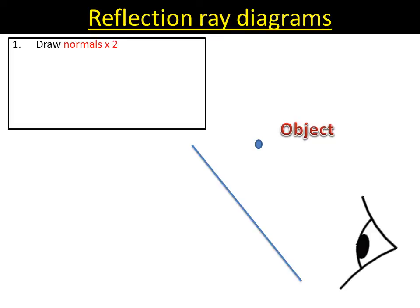So the first thing you do is draw two normals. Kind of halfway between the object and the eyeball will be a good starting place, but it really doesn't matter where you draw them.